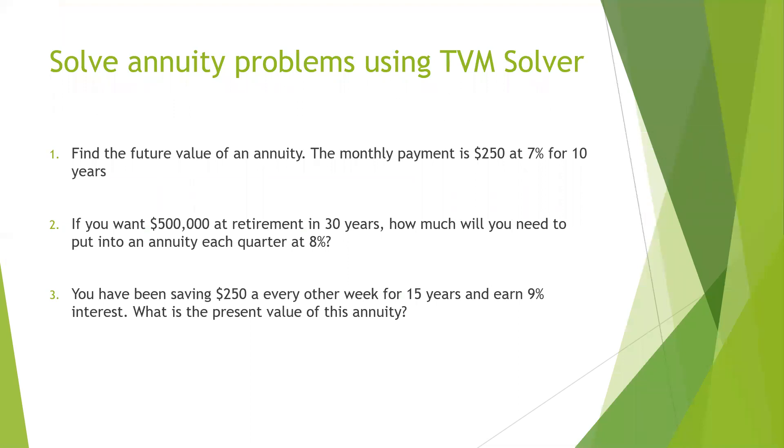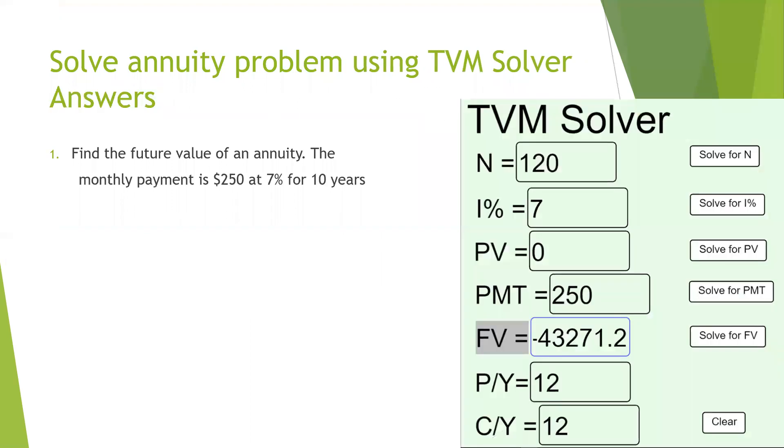The first one we're going to talk about is find the future value of an annuity. The monthly payment is $250 at 7% for 10 years. So every month you're putting $250 into your bank or into a CD or stocks or bonds or some type of financial instrument. This is what we're going to put into the calculator.